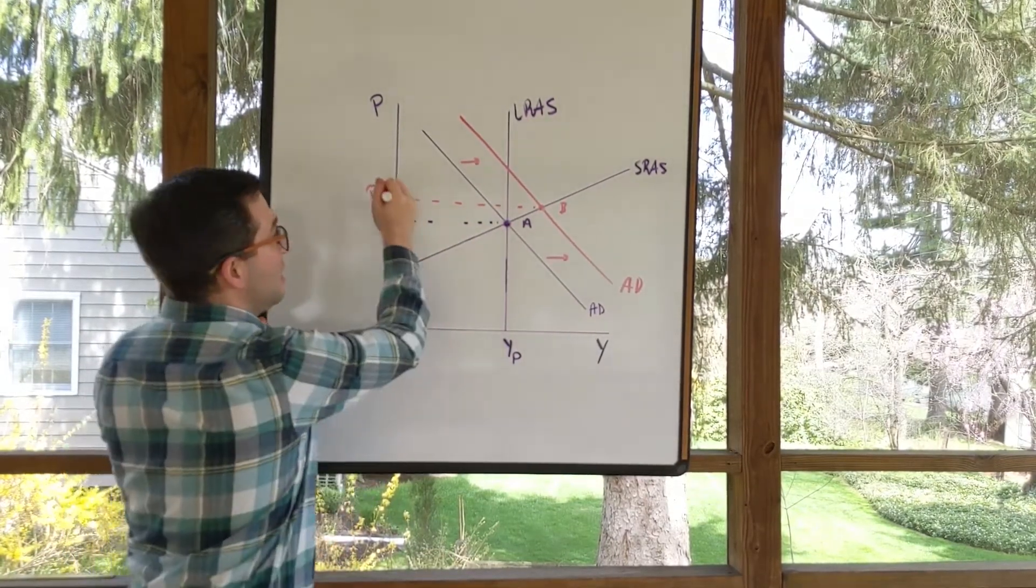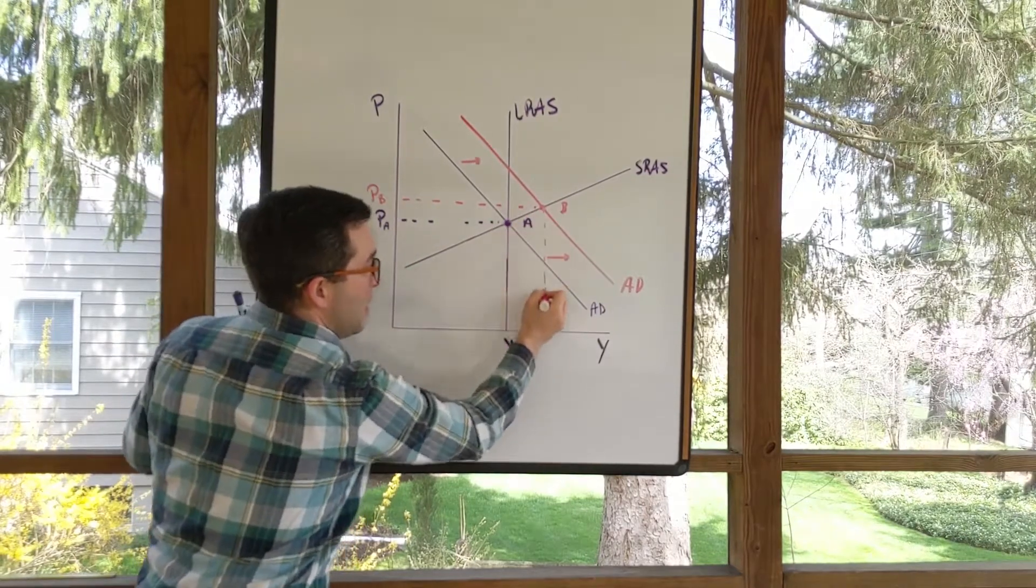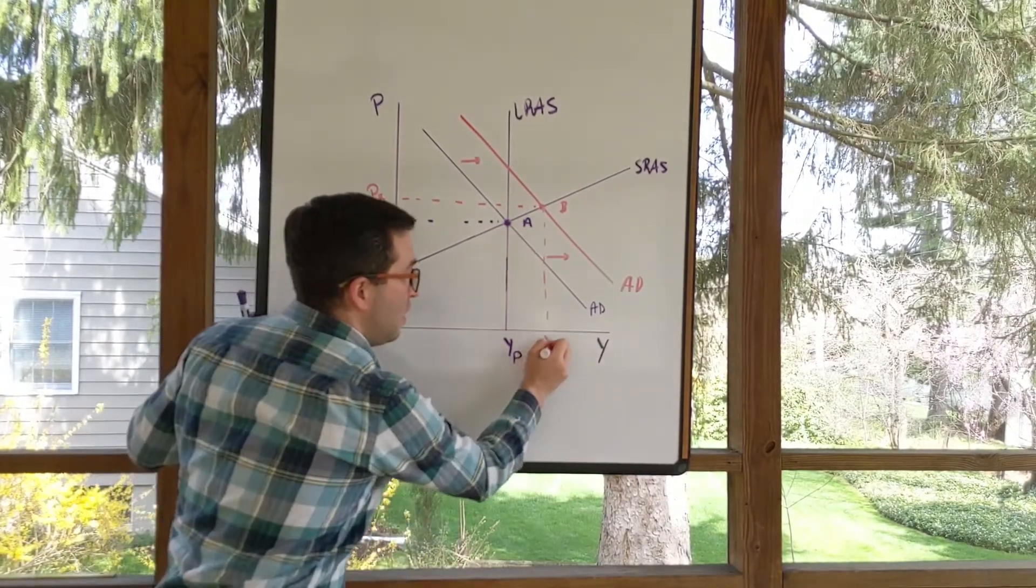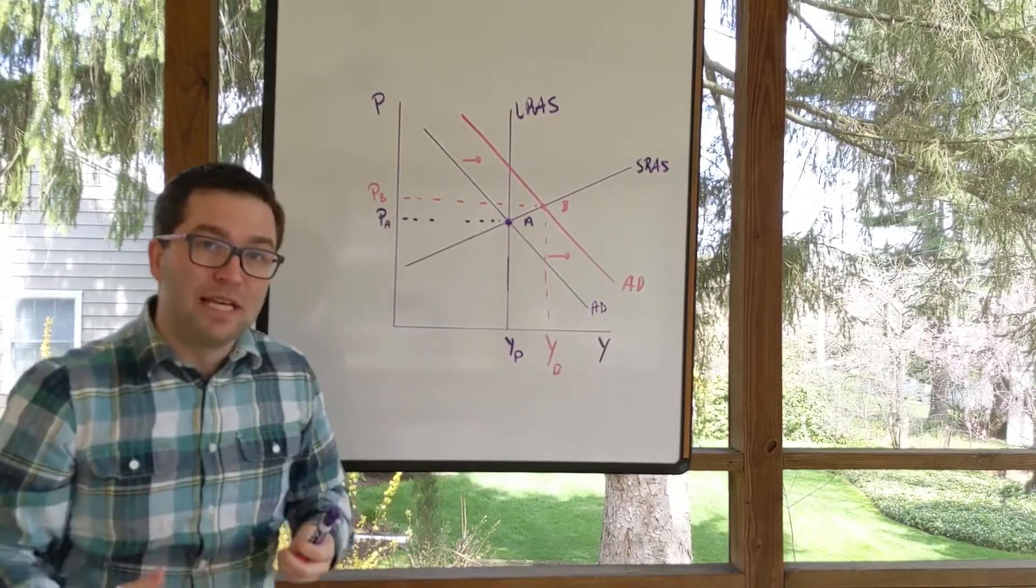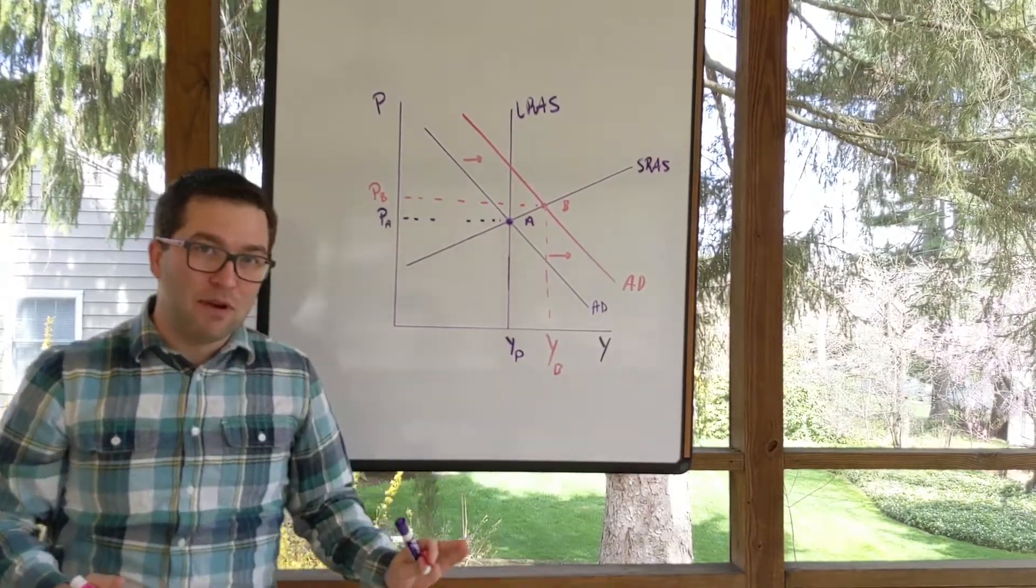We have the price level increasing, and we also have GDP above potential GDP. So we're in an expansionary period.